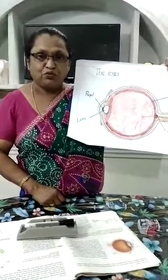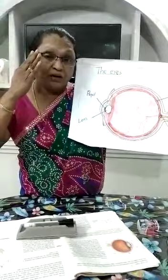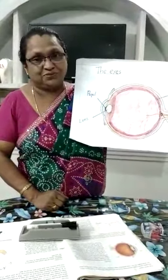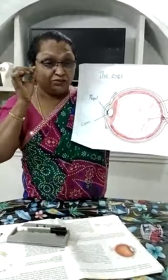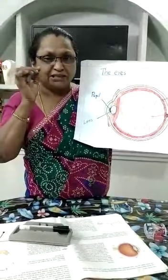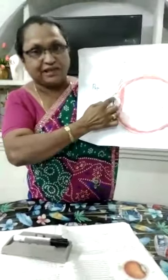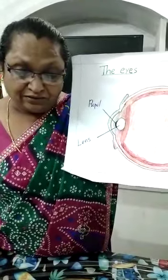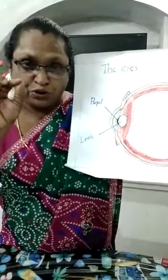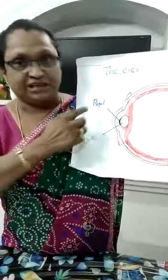The eyelids and eyelashes protect the outer part of the eyes. When you look carefully in the mirror, you can see a dark, small hole in the colored center of the eye. This part is called the pupil. The pupil is the dark spot at the center of the colored part of the eye.